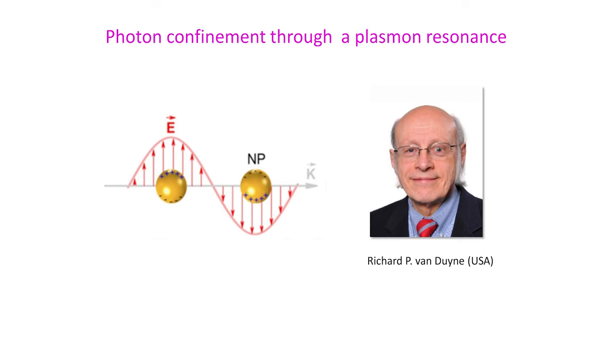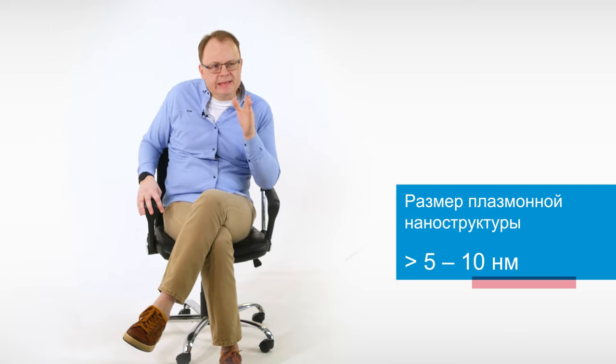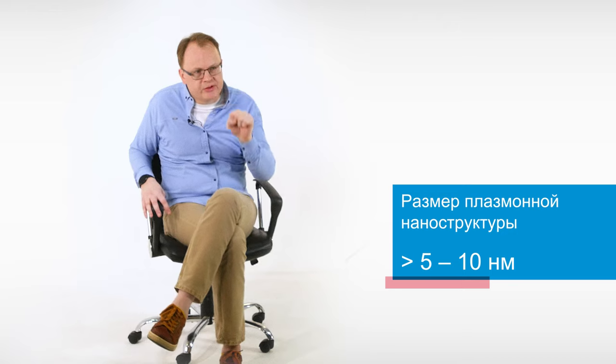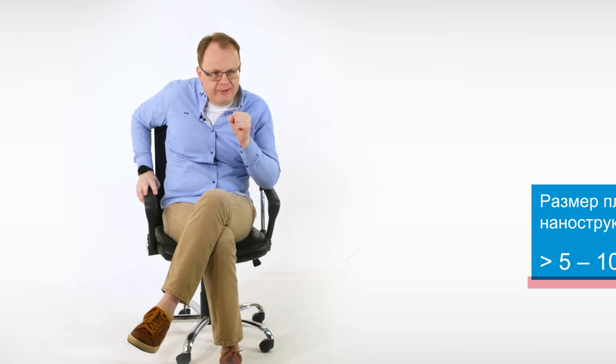In most cases, plasmonic nanostructures are used to solve this problem, which absorbs the light ideally at the plasmon resonance. Spatial localization of a near-field photon is limited to the size of the plasmonic nanostructure and must exceed 5-10 nm. This is the spatial resolution that is achievable in TERS microscopy.